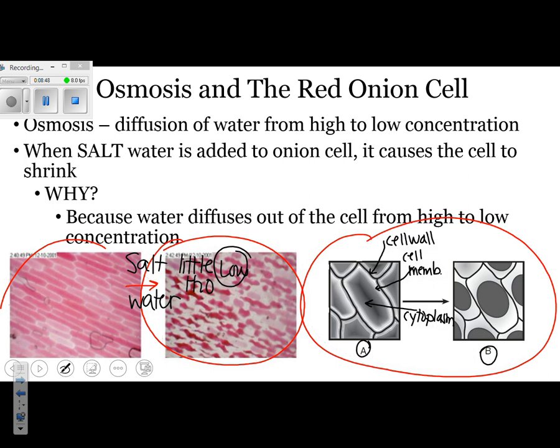After you added that salt water, which the arrow is supposed to indicate, what happens? Well, you'll notice we're looking at the same exact group of cells, but they look very different. That's because the cell wall stayed in the same exact spot it was originally. But what happened to that cell membrane? That cell membrane pulled away. It pulled away because the water moved out of the cell. The last thing we have is the cytoplasm. The cytoplasm is all the gray matter that's left behind.